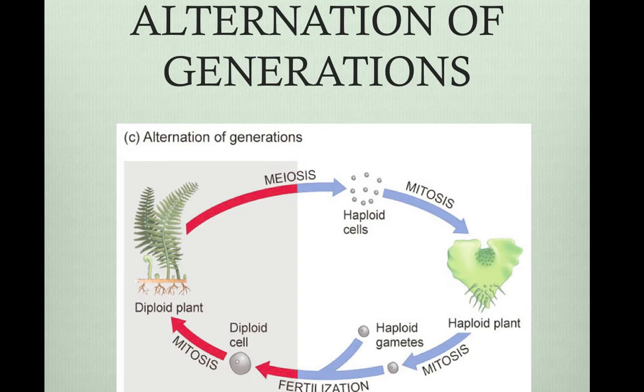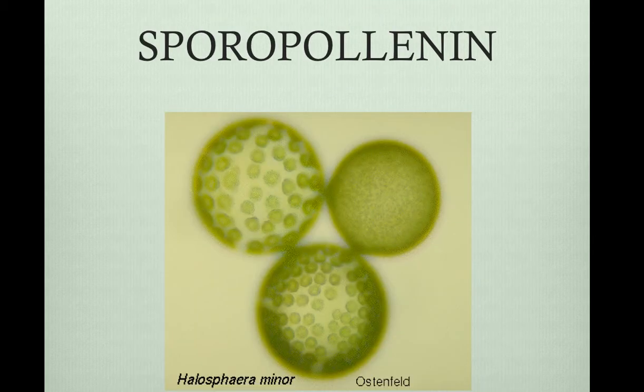Sporopollenin is a secondary product. It's a polymer synthesized by a side branch of a major metabolic pathway of plants. It is resistant to almost all kinds of environmental damage. It is especially important in the evolutionary movement of plants onto land. Sporopollenin is the most durable organic material known. It is in the cell walls of spores, and it is produced by all four groups of plants.